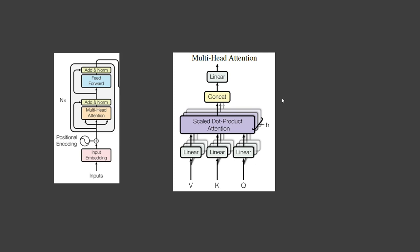This combination of multiple heads enriches the representation by capturing diverse patterns and dependencies. By employing multi-head attention, transformers can effectively capture both local and global information, handle various types of dependencies, and facilitate parallel computation, making them highly effective in tasks such as machine translation, language understanding, and text generation.